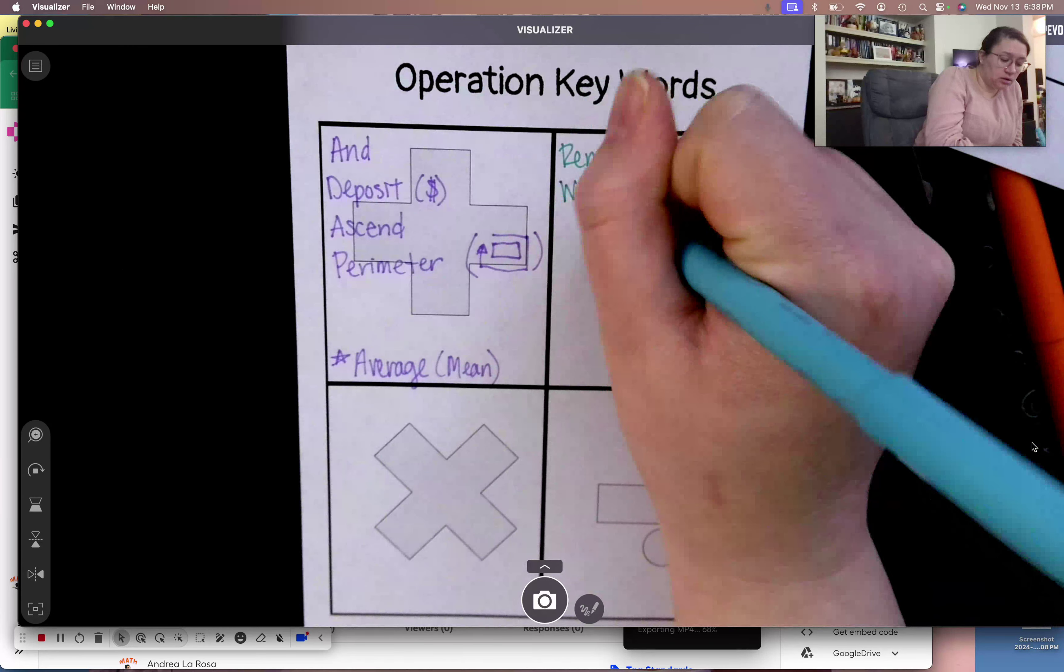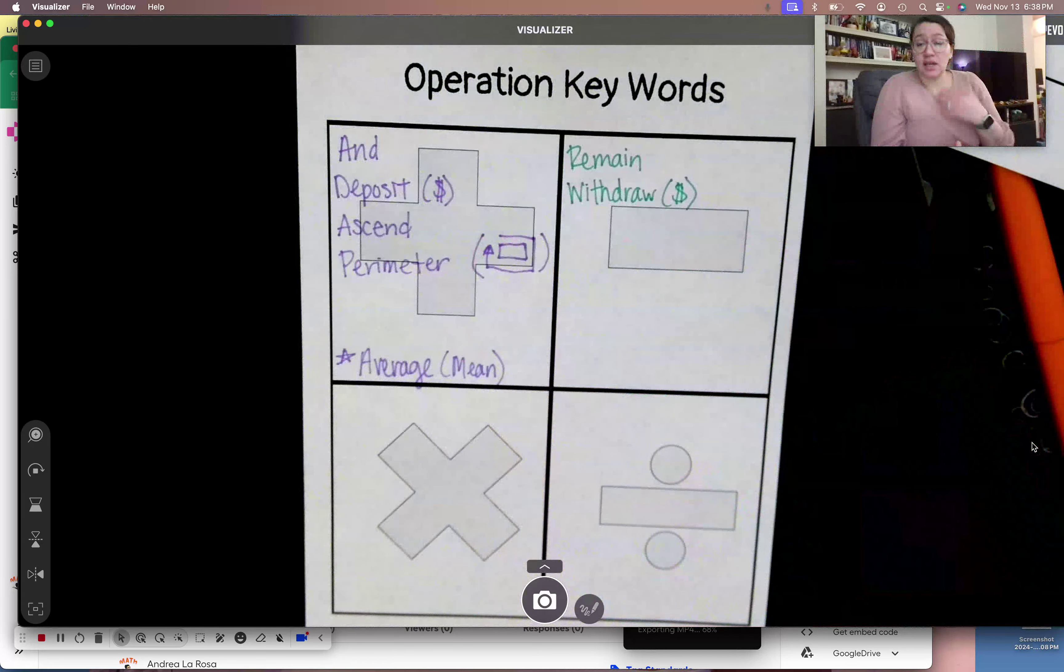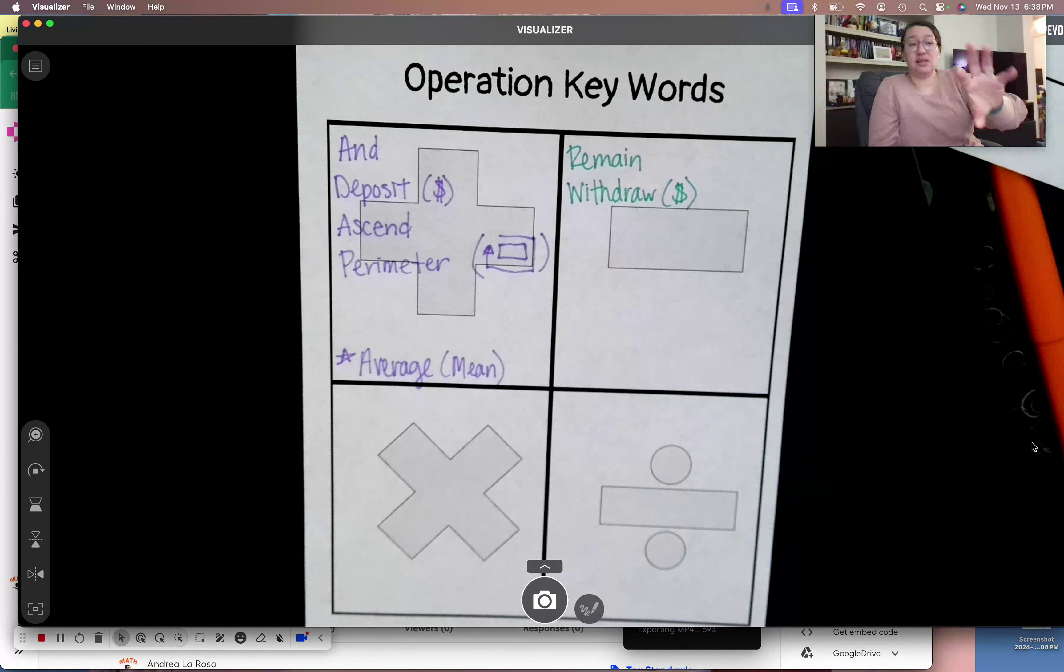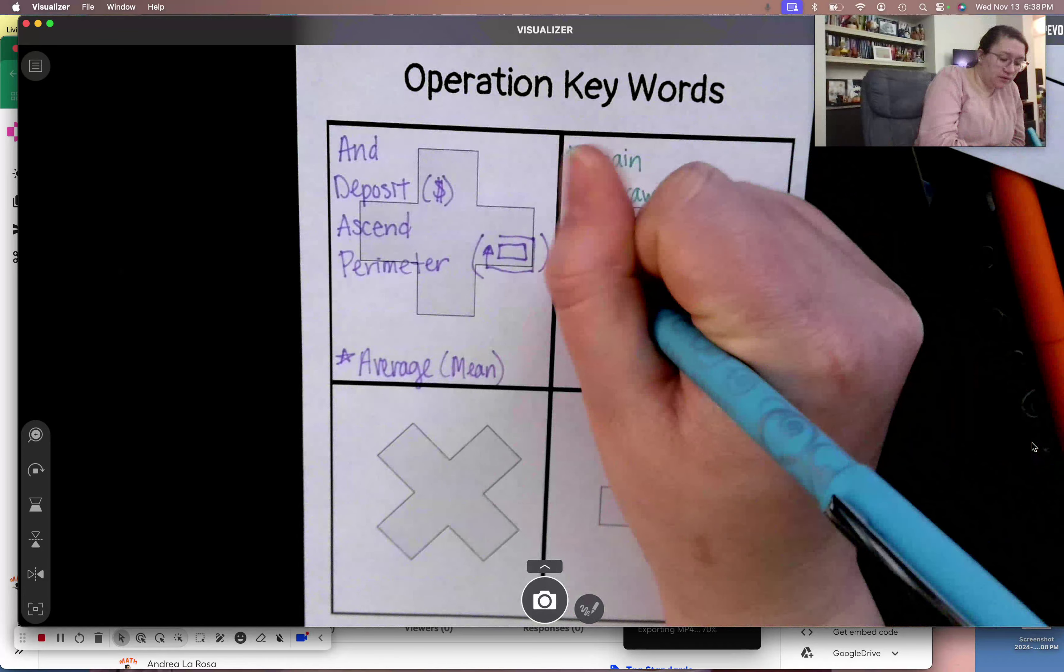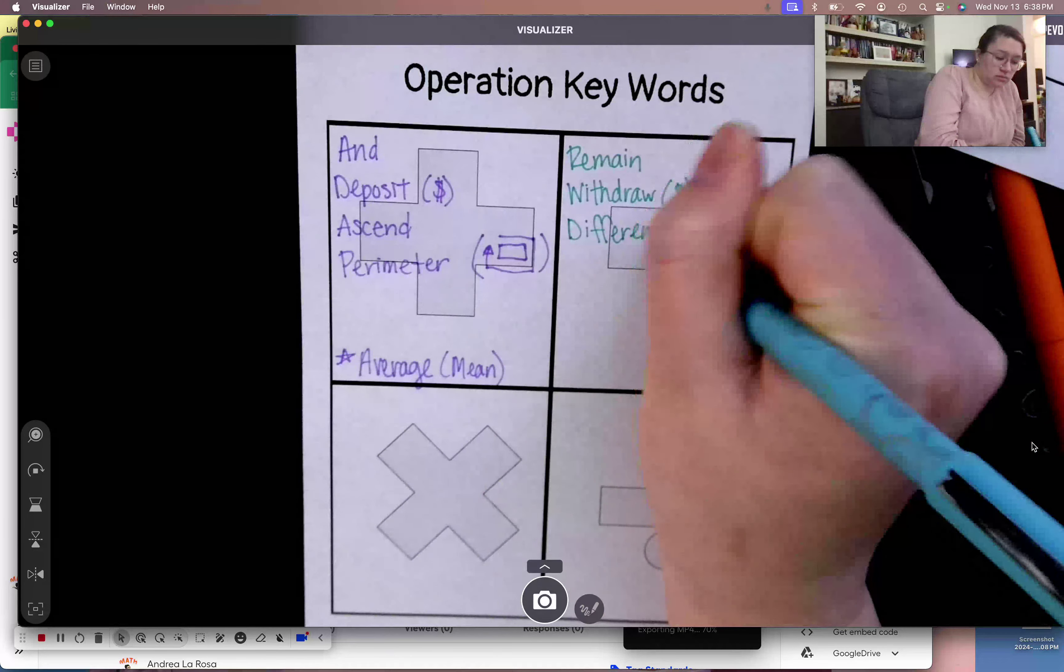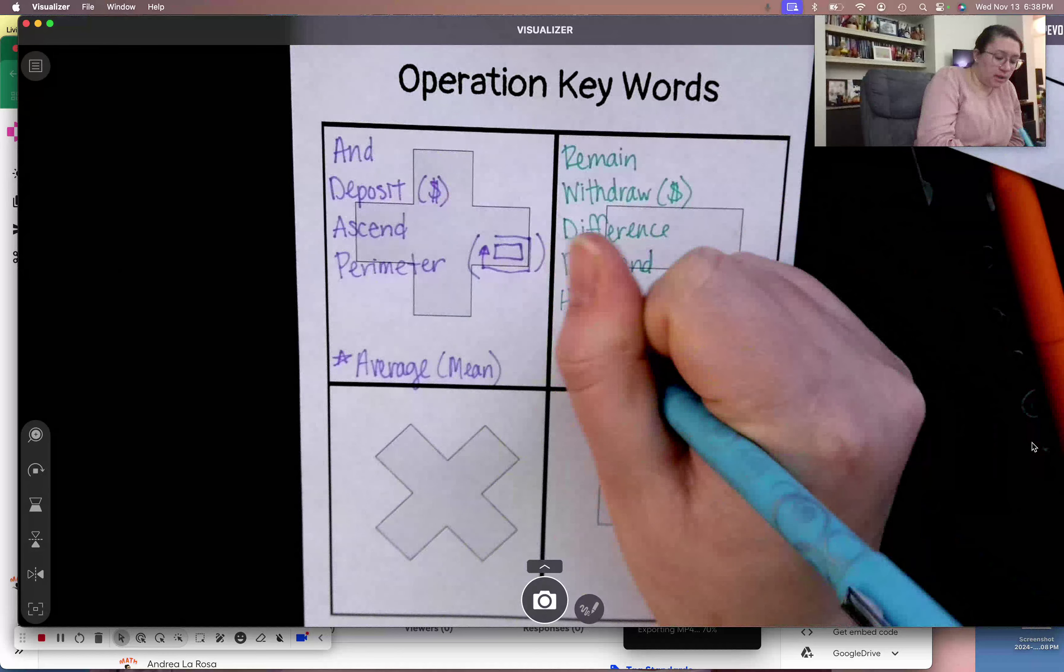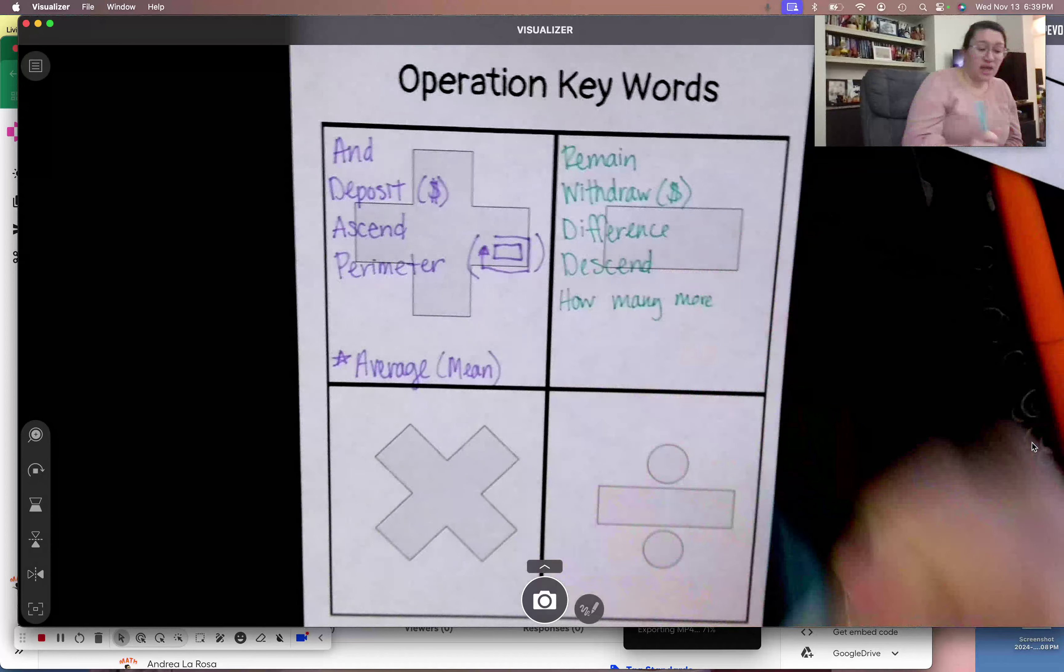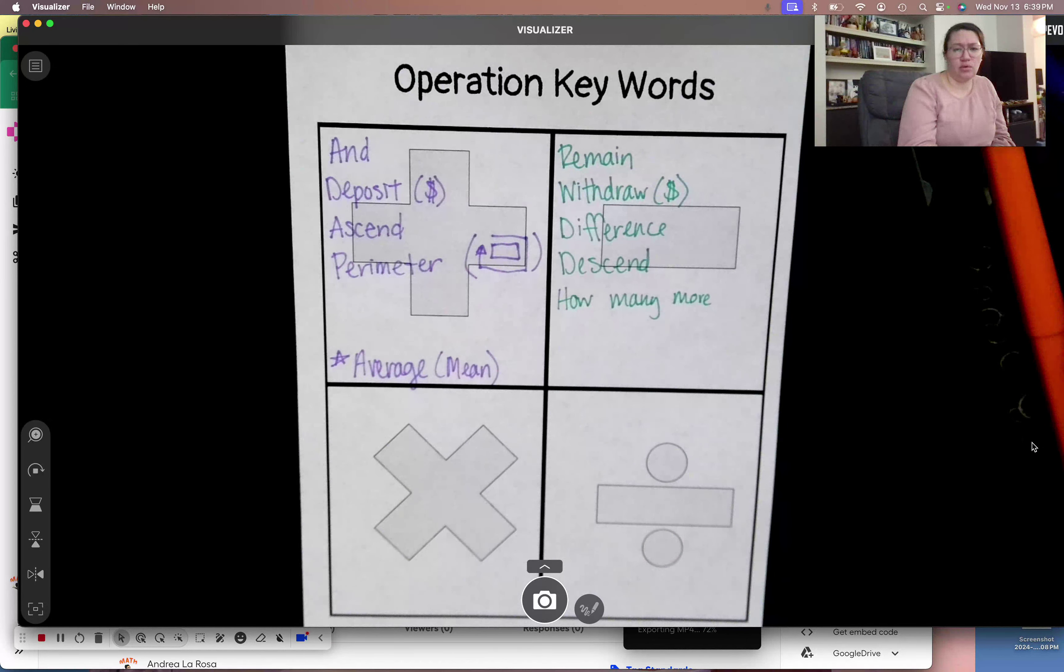The word withdraw is the opposite of deposit. Also with money. It's like I go to an ATM and I withdraw money. I take money out of my account. I subtract money from my account. The word difference, descend. And how many more? Again, there's more than just that for subtraction. But those have just been the ones that have been getting my trouble. Pause the video if you need to.